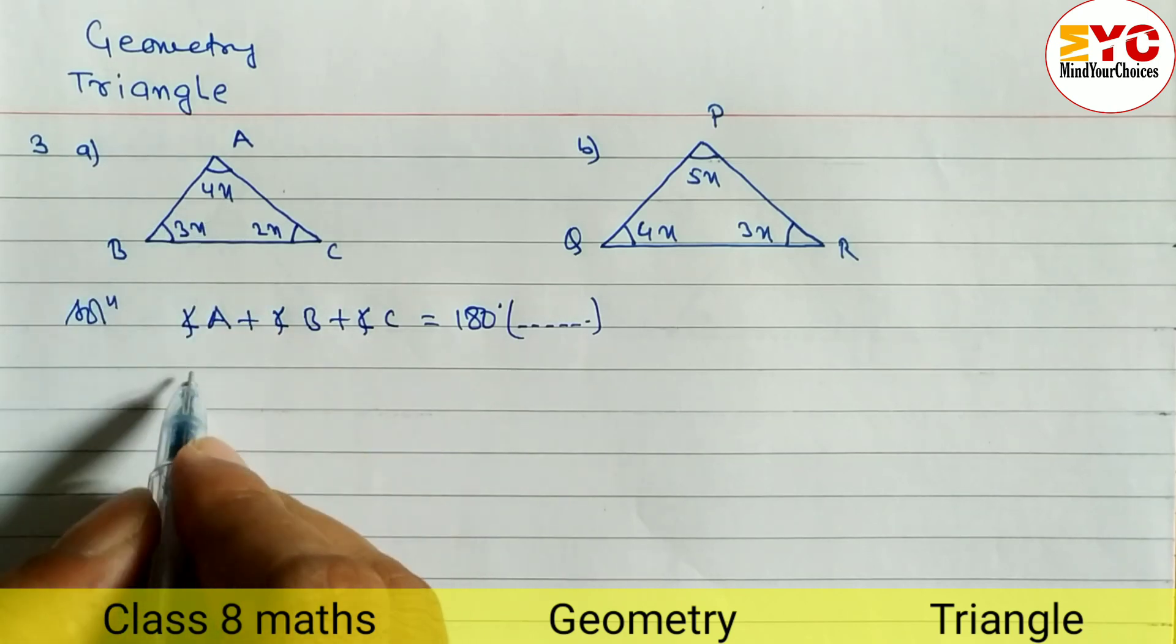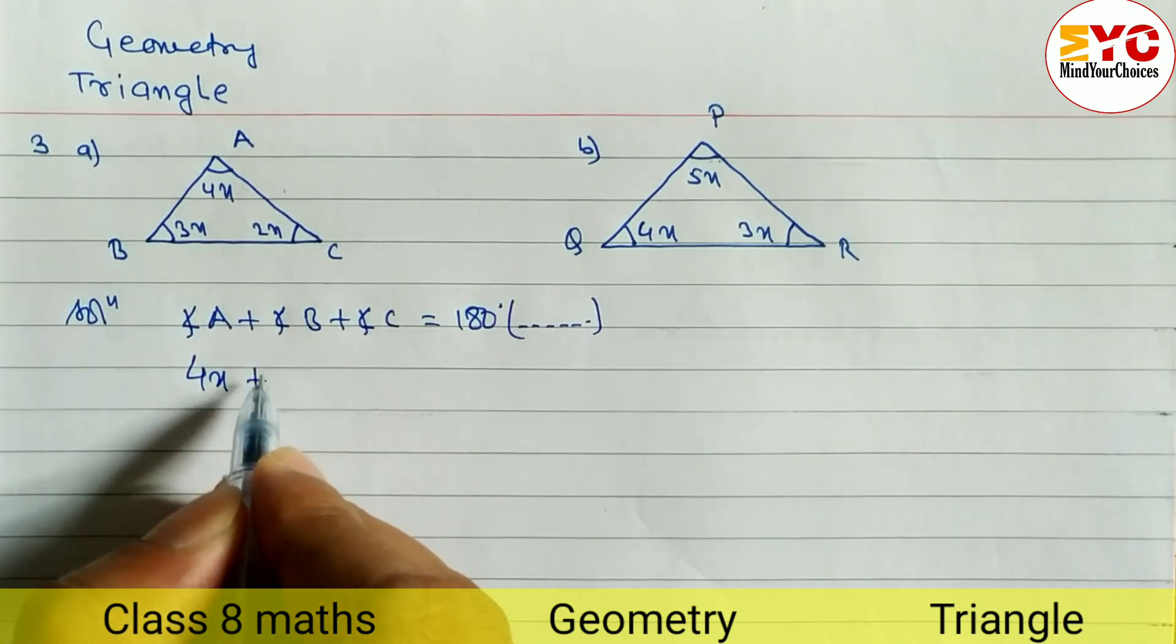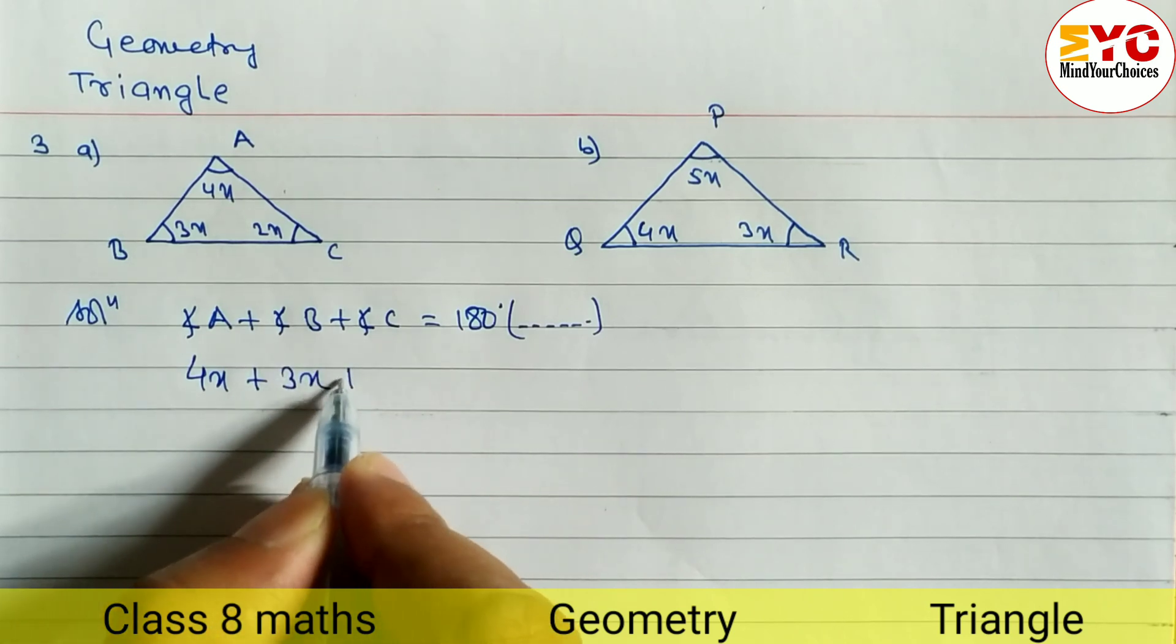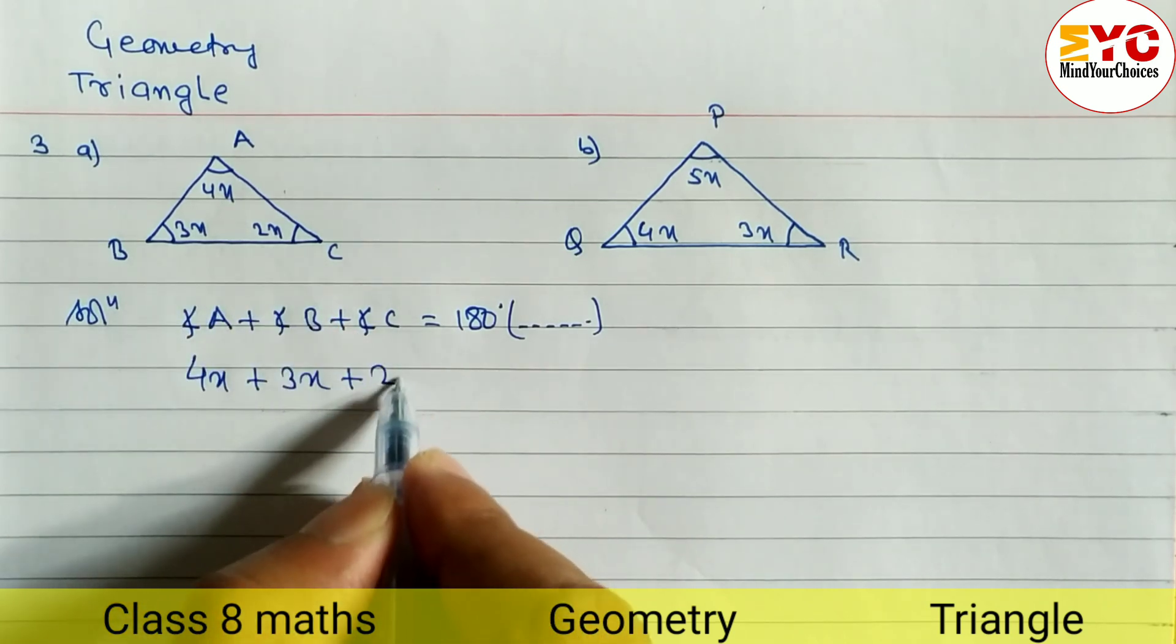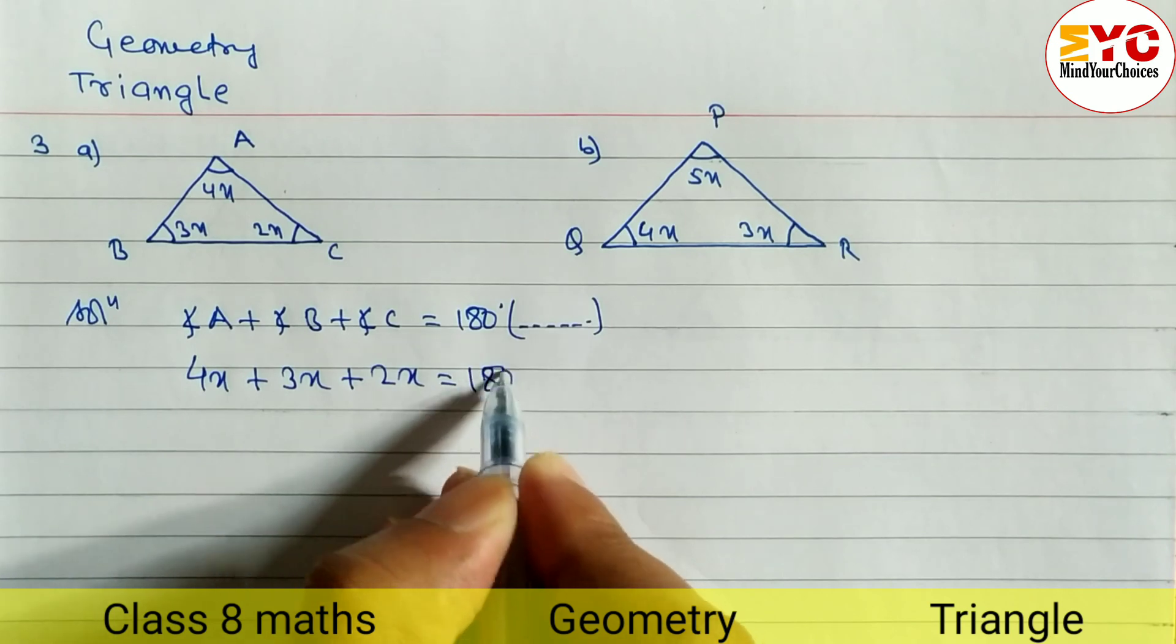What is the value of a? a means 4x. So angle a is equal to 4x. Angle b, angle b is equal to 3x. So 3x plus angle c is equal to 2x. So 2x is equal to 180 degrees.